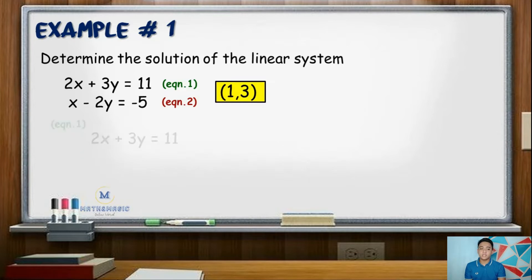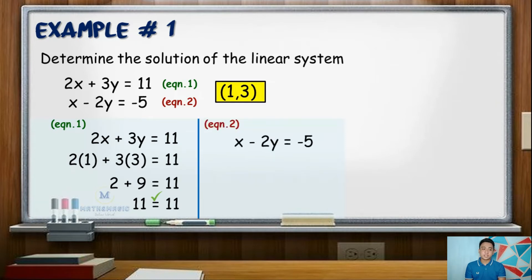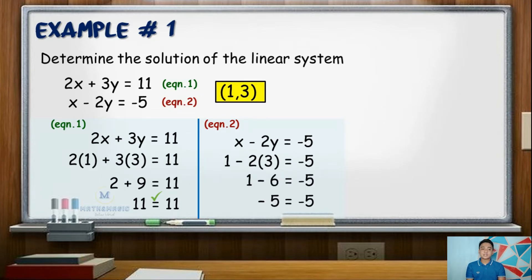Using equation 1: 2x plus 3y equals 11. If x is 1 and y is 3, then 2 times 1 is 2, plus 3 times 3 is 9, and 2 plus 9 is 11. The left side equals the right side, confirming our solution is correct. To also verify with equation 2: x minus 2y equals negative 5. That gives 1 minus 2 times 3, which is 1 minus 6, equal to negative 5. Hence, the solution set (1, 3) is confirmed correct.